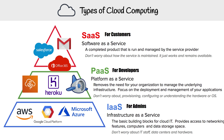Going down to Platform as a Service — this is really intended for developers. It removes the need for your organization to manage the underlying infrastructure and lets you focus on the deployment and management of your applications. You don't have to worry about provisioning, configuring, or understanding the hardware or OS — it just works. You have an app, you push it. For AWS, you have Elastic Beanstalk. There's also Heroku, which is a very popular service, and I believe there's one called App Engine for Google.